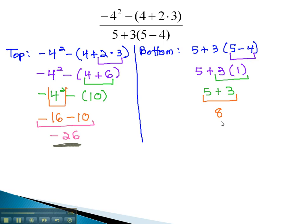Now that the top and bottom have been simplified, we're ready to divide those results. The top, or numerator, is negative 26. The bottom, or denominator, is 8. We can reduce this fraction by dividing by 2, giving us negative 13 fourths. And that completes this problem.